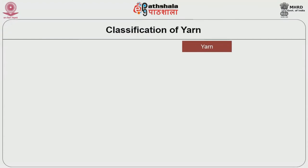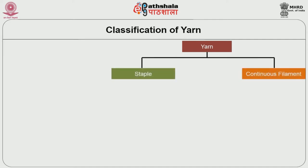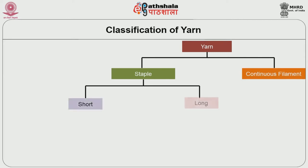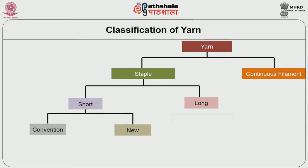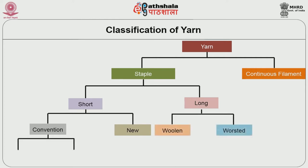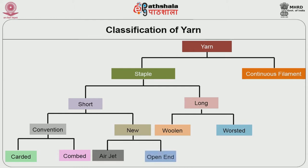Now we go into the classification of yarn. There are two types of broad classification: staple yarns and continuous filament yarns. Regarding staple yarns, there are two more types — short staple yarns and long staple yarns. Under short staple yarns, there is conventional yarn and new innovative technologies. Under conventional yarns, there are two types: carded ring spun and combed ring spun. Regarding new technologies, there are air jet spun, rotor spun, and vortex spun, among many types.